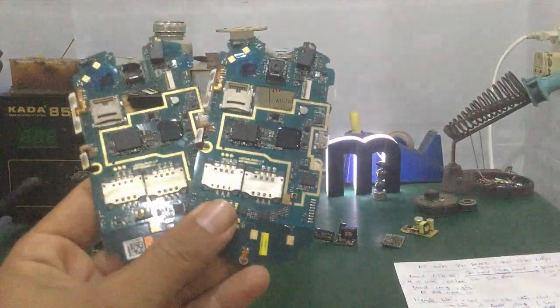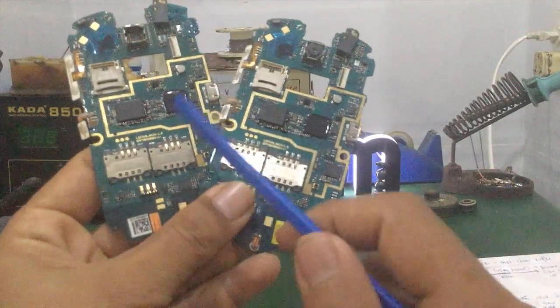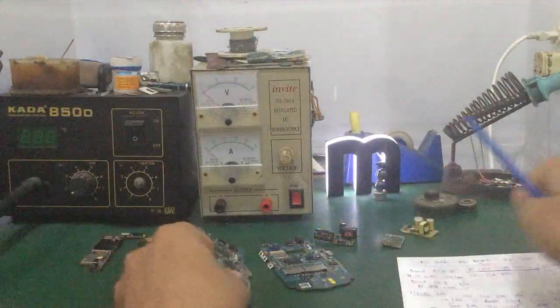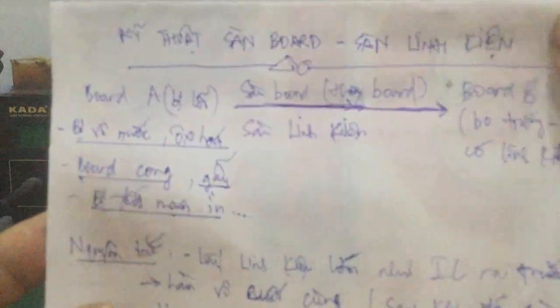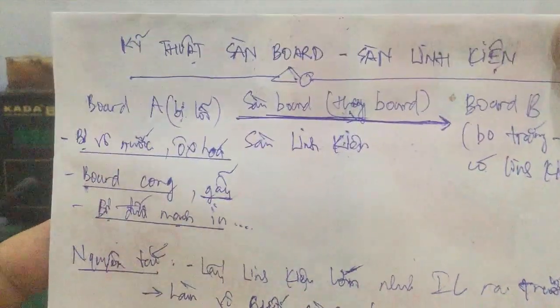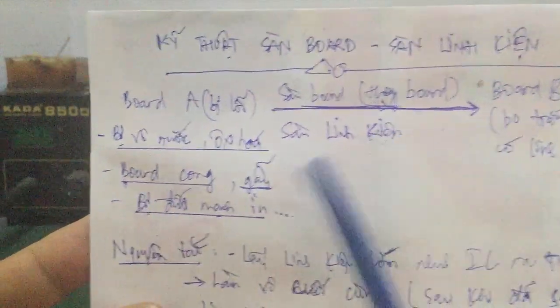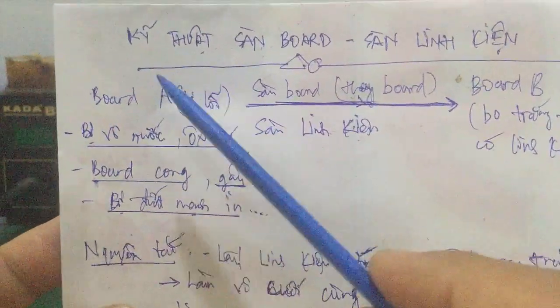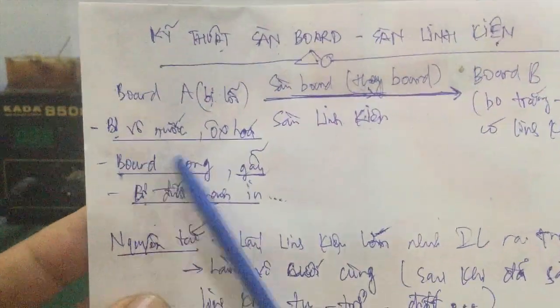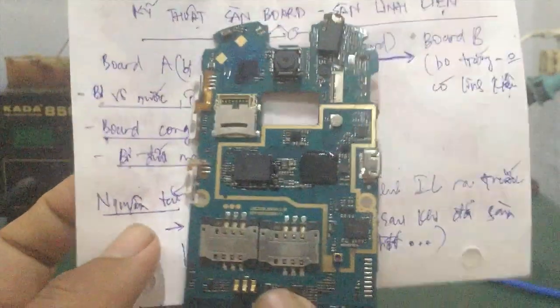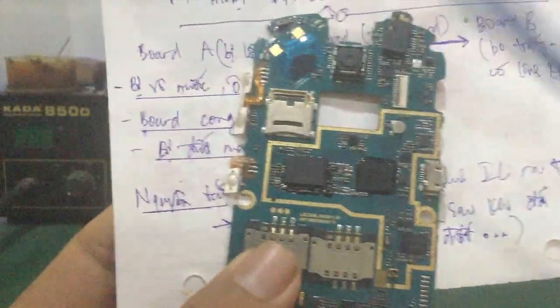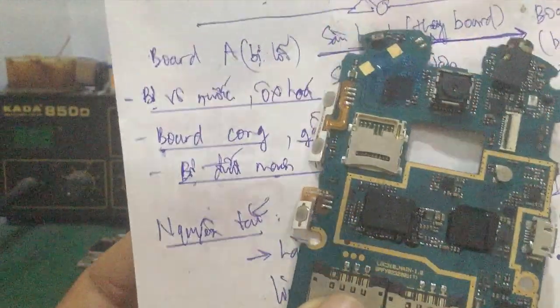In this case, we have one board (Bo A) that is faulty. For example, if it was exposed to water, it would be oxidized (oxy-hóa), then it would have peeling (bong chóc), then cracking (nứt), due to oxidation.